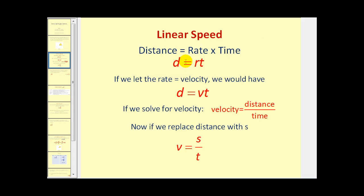You probably recall the formula distance equals rate times time. If we let the rate r equal the velocity, we would have distance equals velocity times time or d equals v times t. If we solve this equation for velocity by dividing both sides by t, we would have velocity equals distance divided by time. If we replace the distance with the variable s, we would have velocity equals s divided by t. We use s when we talk about circles mainly because s is also used for arc length.